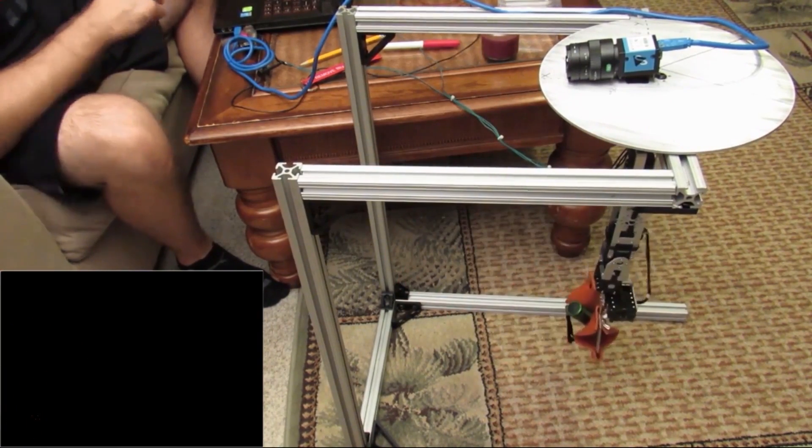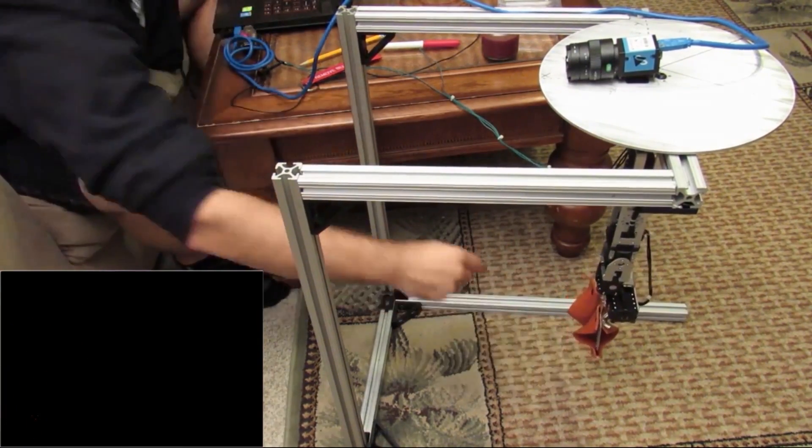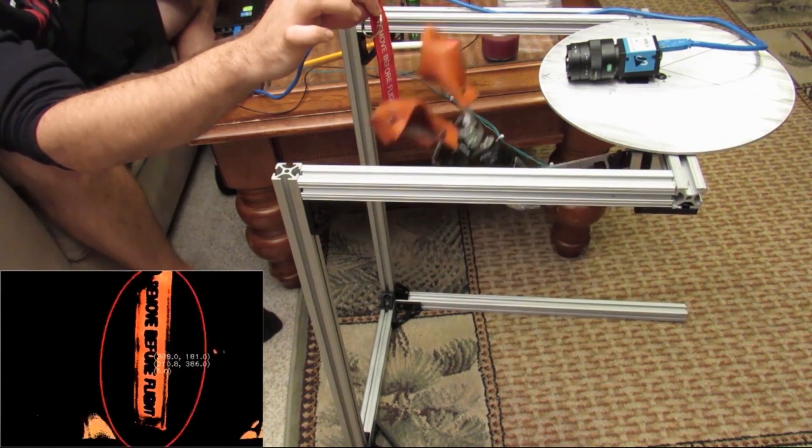Take a robotic arm for example. Transformation matrices can be used to tell what angle the servos need to be to reach the desired position in space.